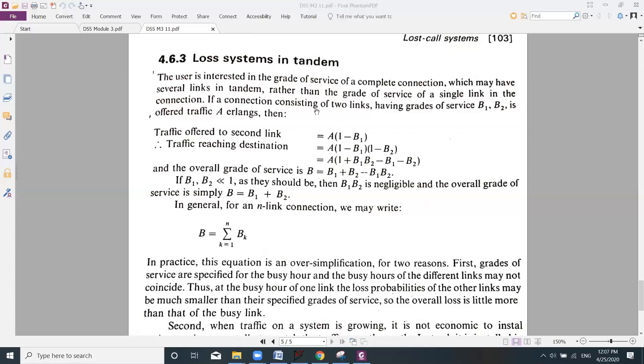If a connection is consisting of two trunks, having a grade of service B1 and B2, offering a year long of traffic, then traffic offered to the second link is given by A times 1 minus B1. You have a system with two trunks and two lines.